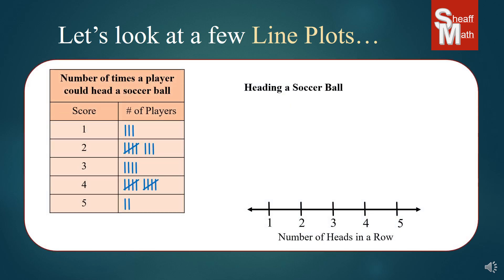Here is a new type of table. The title says 'Number of Times a Player Could Head a Soccer Ball' — how many times in a row could you do it before it falls on the ground? We have one, two, three, four, and five times. The number of players is in tally form. If you're not familiar with tally, it's an easy way to mark numerous things you're trying to keep track of.